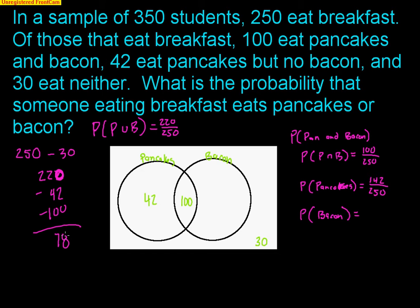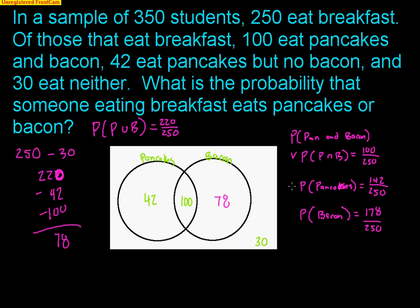220 minus 42 minus 100 leaves me with 78. So 78 kids like bacon only, no pancakes. The probability that somebody likes bacon — the entire circle for bacon — would be 178 out of 250. So we now know: 'and' is 100, pancakes is 142, bacon is 178, and neither is 30.